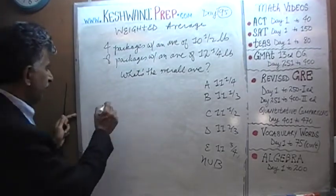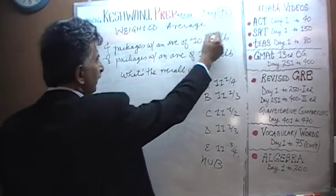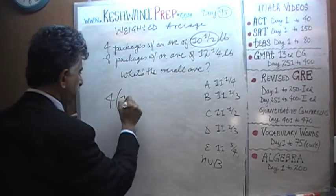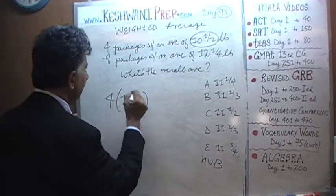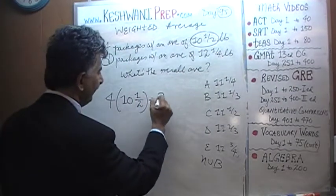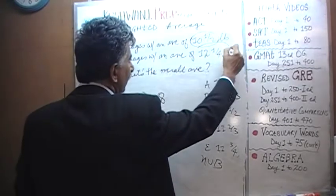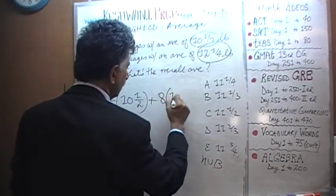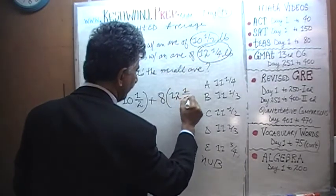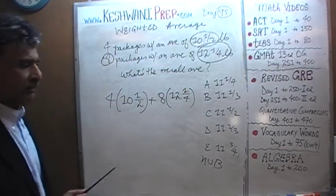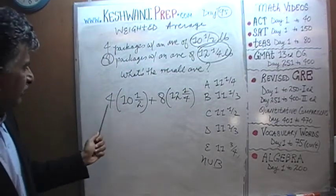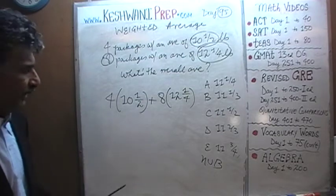We have four of these, so we multiply four times that quantity right here, 10.5. And then we have eight of these packages, plus eight times this quantity, 12.25. And then we need to divide that by the number of packages, which is eight packages here and four packages here. We have 12 packages. We'll worry about that later.